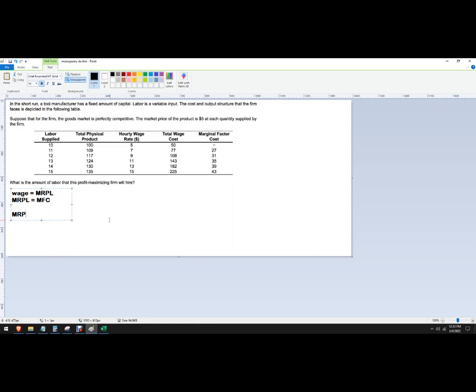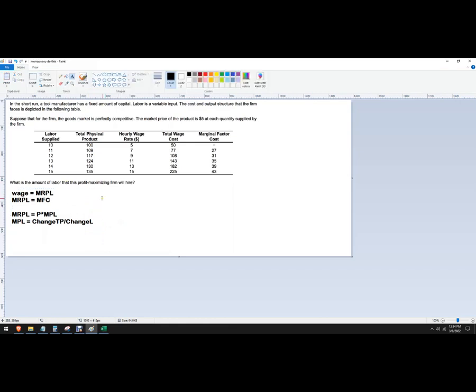Now marginal revenue product of labor is the price of the product times the marginal product of labor. So it's really like the productivity of each worker times the value of the product that they're selling. The marginal product of labor is the change in total product divided by the change in labor. We're going to use capital L usually for labor. So here are your relevant formulas that you can use and we'll figure this out.